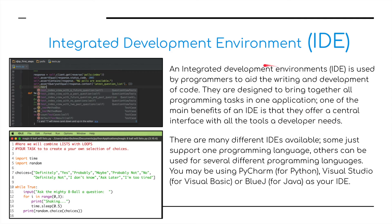The third and final part of this video is IDEs — Integrated Development Environments. We've got two examples here: the top one is PyCharm, and then we've got Python Idle at the bottom. An IDE is used by programmers to aid the writing and development of code, designed to bring together all programming tasks in one application. One of the main benefits is that they offer a central interface with all the tools a developer will need. Some IDEs just support one programming language; others can be used for several. You may be familiar with PyCharm for Python, Visual Studio for Visual Basic, or BlueJ for Java.